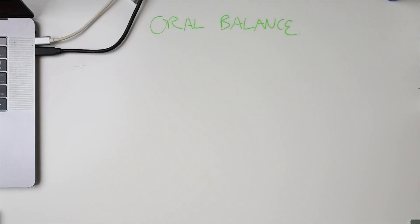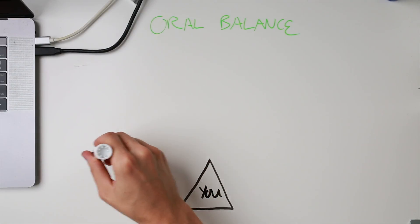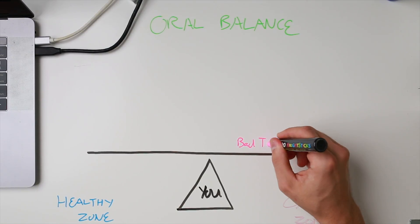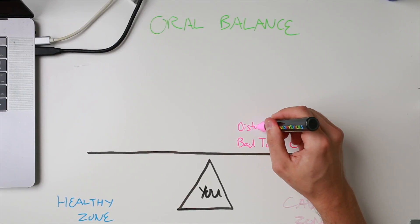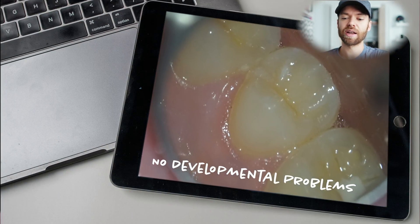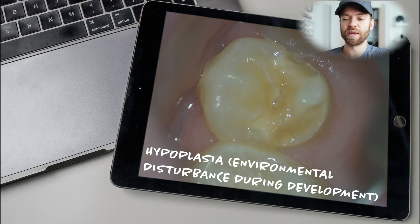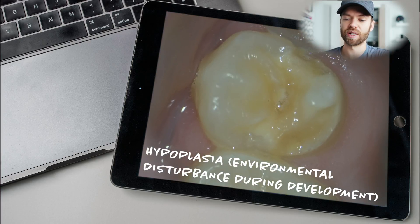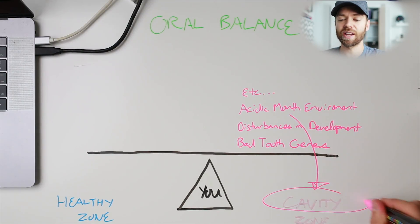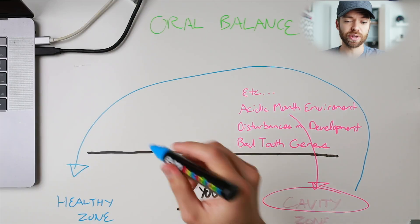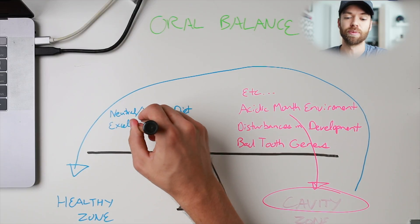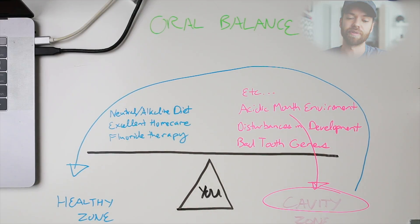With susceptibility in mind, you need to understand oral balance. Here you are with a teeter-totter on top of you — as we tilt to the right we develop cavities. Things that influence these cavities are things like bad tooth genetics and developmental disturbances. For example, should you have had a bad fever as a child during that tooth's development, you can develop something called hypoplasia where the enamel is much weaker. An acidic mouth is also another factor that can cause decalcification leading to cavities. To fight this and go the other direction, an alkaline diet, excellent home care, and fluoride are very helpful in preventing cavities.